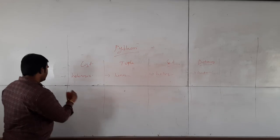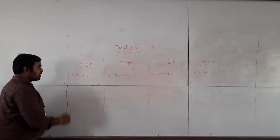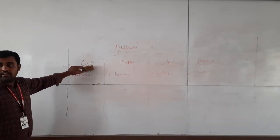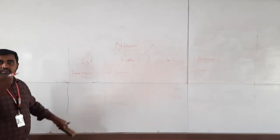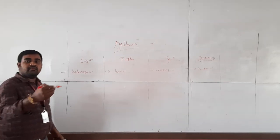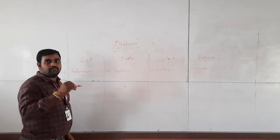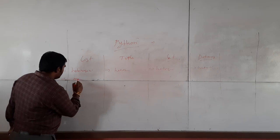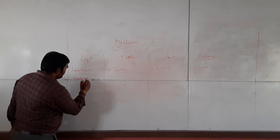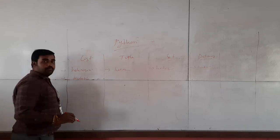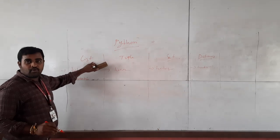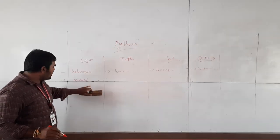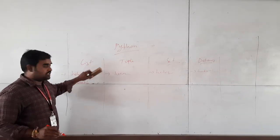Next point is mutable. List is mutable — if you want, you can change the elements from the list. That's why we call it a mutable data type.